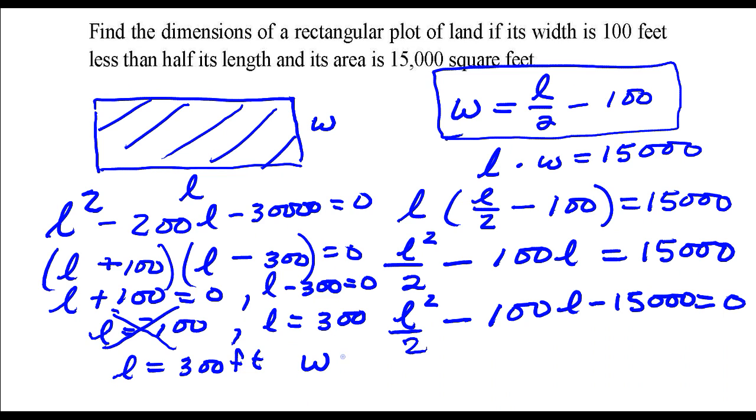Well that would be 300 divided by 2 minus 100, which is 150 minus 100, so the width is 50 feet. And that's it.